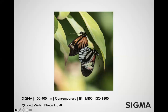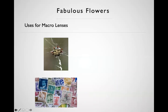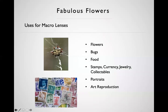Sometimes macro doesn't have to be one-to-one and you don't need a true macro lens. This was done with a 100-400mm at around a third life-size. The advantage of a lens like that is you can be at a greater distance from the subject — bugs and things are going to fly away if you get too close, so being able to stand back a few feet gives you a much better opportunity.